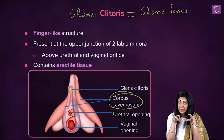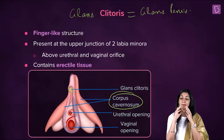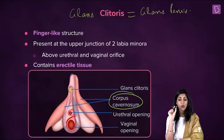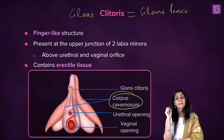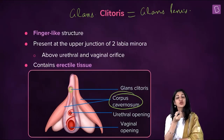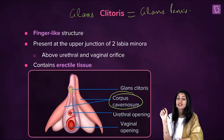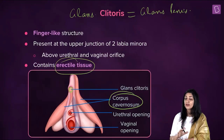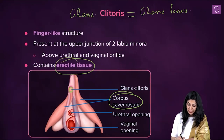The clitoris is where a female senses pleasure. Unlike the penis, which also conducts urine and semen, the clitoris is only for pleasure. It contains erectile tissue and is surrounded by corpus cavernosum, similar to the corpus cavernosum and spongiosum in the penis. So you can see the glans clitoris, the erectile tissue, corpus cavernosum, and separately the urethral opening and vaginal opening.